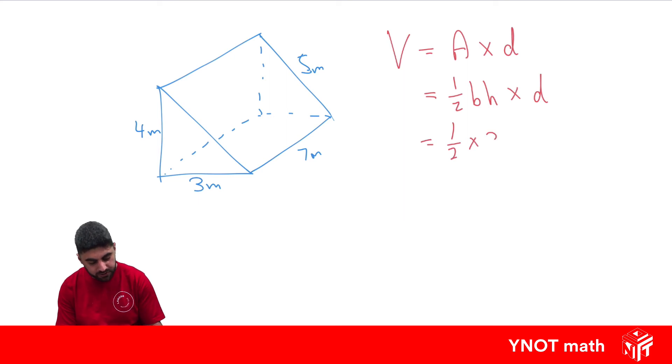Times the distance between those two areas that are the same, which is this one here, which is 7. So we're going to get a half times 3 times 4, which is 12.